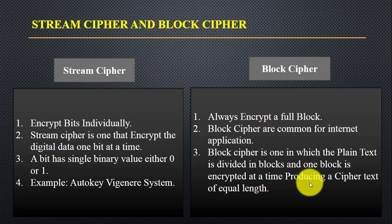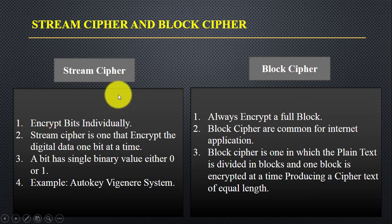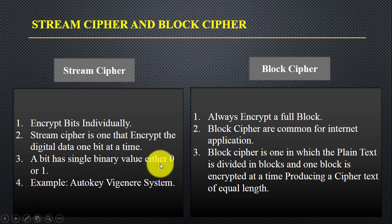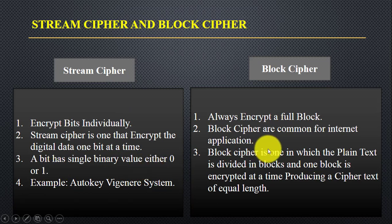So you can see the difference between stream and block cipher. In the case of stream cipher, it encrypts one bit at a time, where a bit is either zero or one. In the case of block cipher, we divide the plain text into blocks and then encrypt one block at a time.